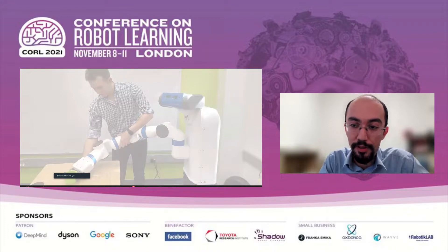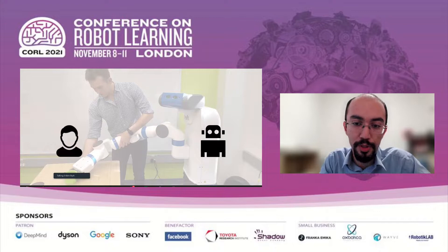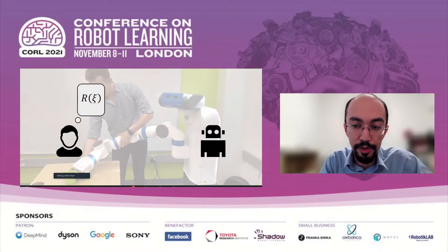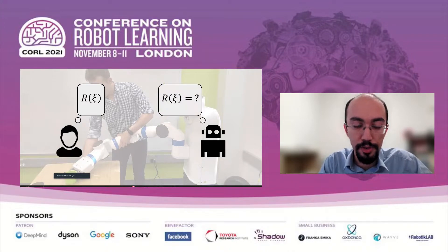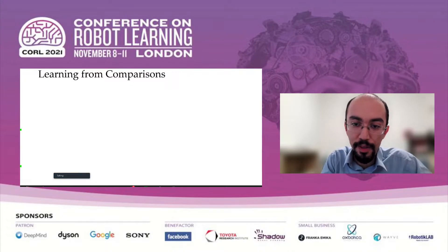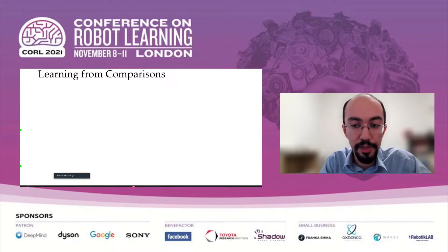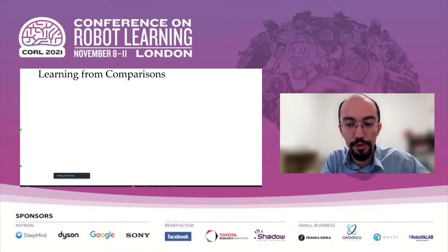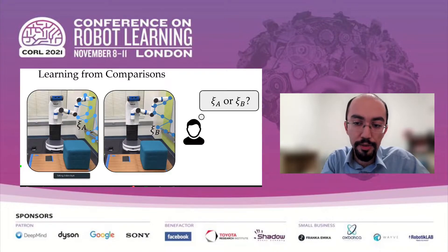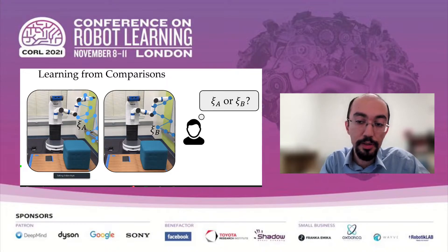Let me begin with defining the standard reward learning problem. We have a user who wants a robot to perform a task, and this user has an internal reward function that he wants the robot to optimize. However, the robot doesn't know this reward function. One popular way to learn the reward function of the human is through comparisons. In this approach, the robot shows two trajectories to the user, and the user tells which trajectory they prefer. Based on their responses, the robot learns the underlying reward function.